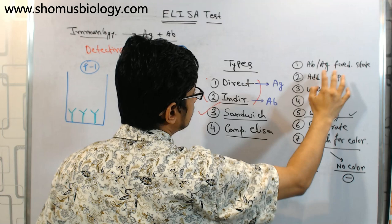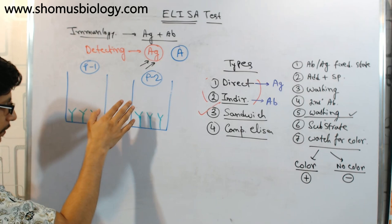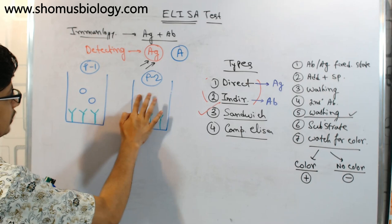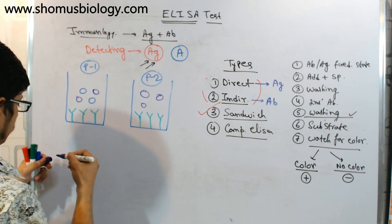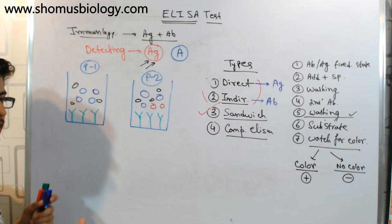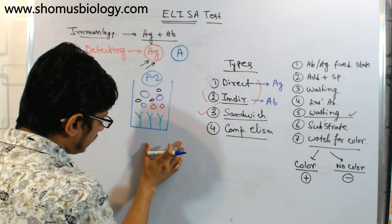The first step is fixing the antibody to the bottom of the well. Then we add the specimen — the patient specimen from Patient 1 and Patient 2 into two separate wells. Test kits generally come with this coating already done. The patient specimen may or may not contain our target antigen. Let's say Patient 1 contains Antigen A, but Patient 2 does not contain any of it.